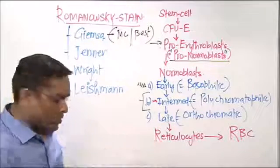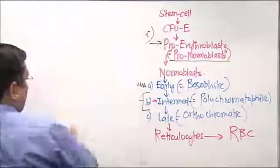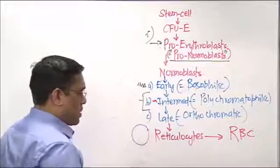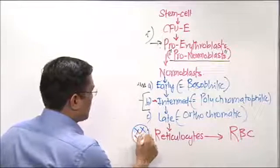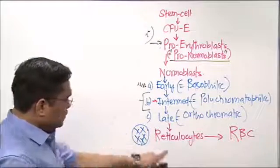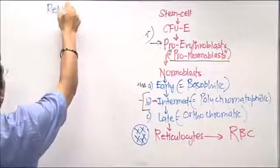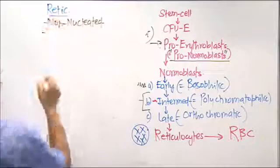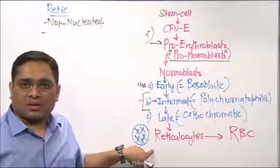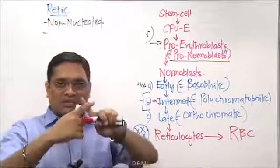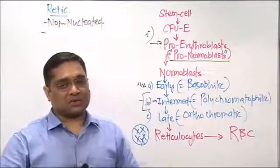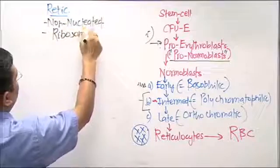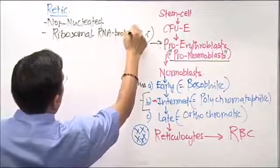Question number three: is a reticulocyte nucleated or non-nucleated? Reticulocytes are non-nucleated — this was a PGI question. They are called reticulocytes because they contain reticulum-like or meshwork-like structures in the cytoplasm. This reticulum-like structure is made up of ribosomal RNA proteins.